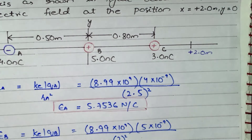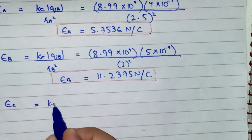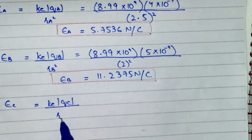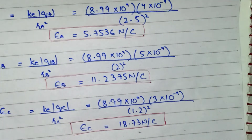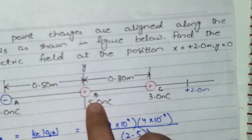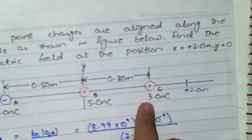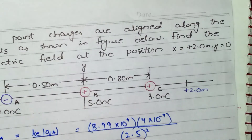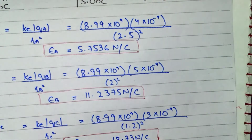For charge C, Ec equals ke times qc over rc squared. This is a little tricky: the distance from the origin to the point is 2 meters, while the distance from the origin to charge C is 0.8 meters. So the distance from charge C to the point is 2 minus 0.8, which equals 1.2 meters.